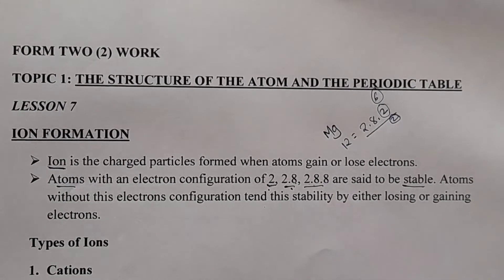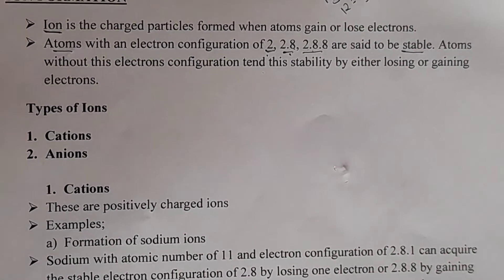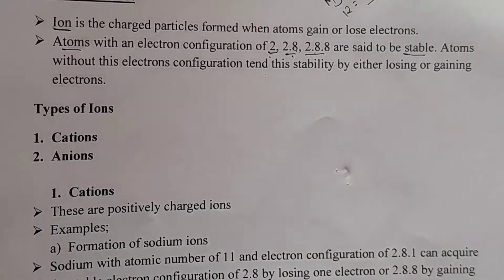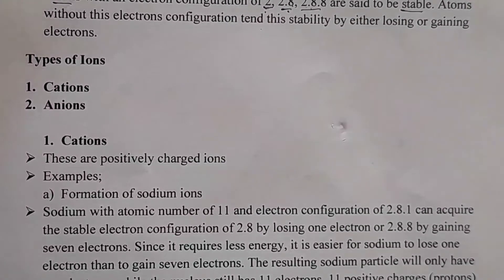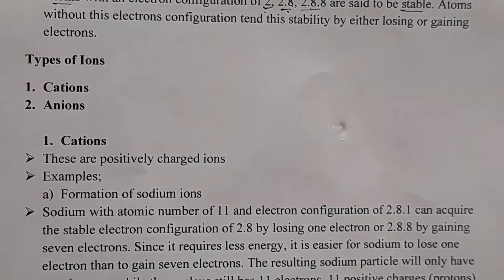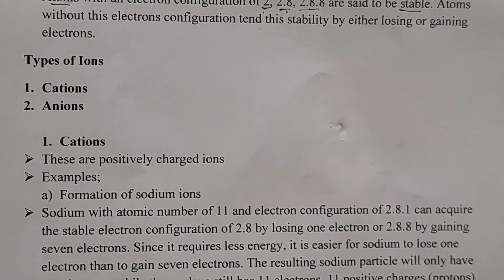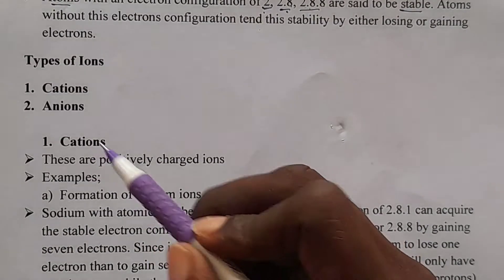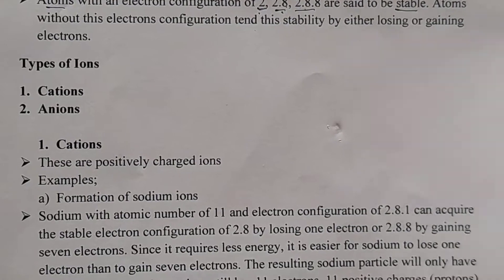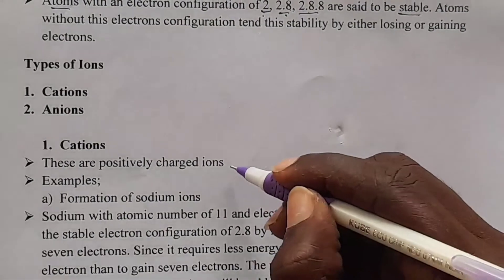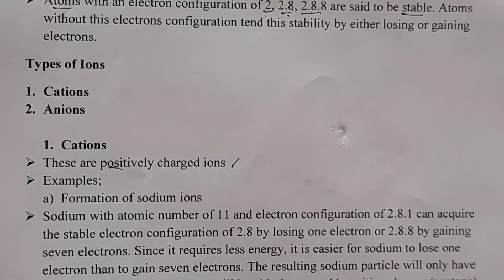Now let's look at the types of ions. We have two types of ions. One is a cation, and the other one is an anion. In this lesson, we are going to deal with only cations. Cations are positively charged ions.